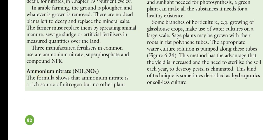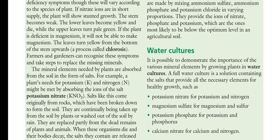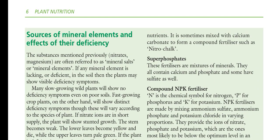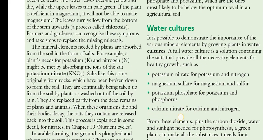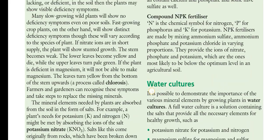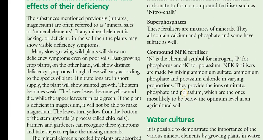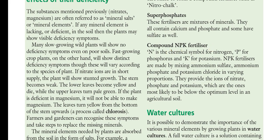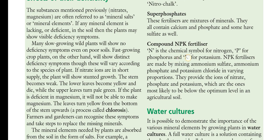Commonly used manufactured fertilizers include ammonium nitrate and superphosphate, as well as compounds containing nitrogen, phosphorus, and potassium. Ammonium nitrate is a rich source of nitrogen but no other plant nutrients. It is sometimes mixed with calcium carbonate to form a compound fertilizer such as nitro chalk. Superphosphate fertilizers contain calcium phosphate, and some also contain sulfate.